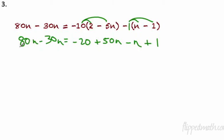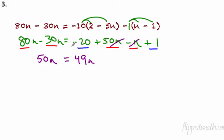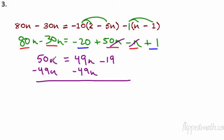Now combine like terms. On the left, put those two together; on the right, put those together as well as the 1 and the negative 20. We get 80n minus 30n, that's 50n, equals 50n minus 1n which is 49n, and negative 20 plus 1 is negative 19. Now we have variables on both sides. Pick the smaller term — that's 49n — and subtract 49n from both sides. 50n minus 49n is 1n, they cancel on the right, and we have negative 19. So n equals negative 19.